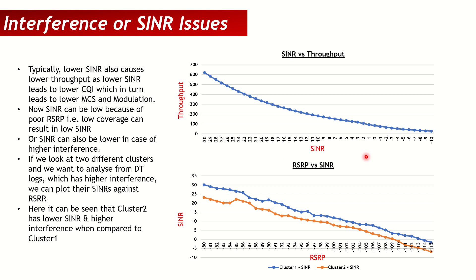The next one is slightly more difficult — interference issues, or low SINR. Similarly to RSRP, if you plot throughput on the Y-axis and SINR on the X-axis, you'll see that as SINR decreases, throughput also decreases. Low SINR gives you low CQI, low CQI gives you low MCS, which gives you low throughput. I covered this in detail in my link adaptation chapter, so do refer to that if needed.